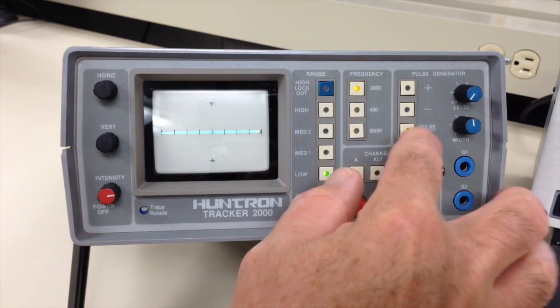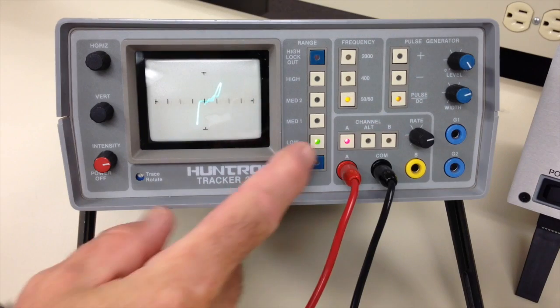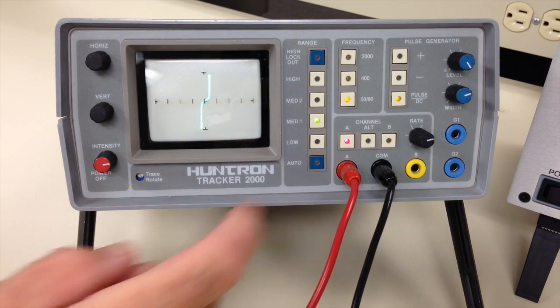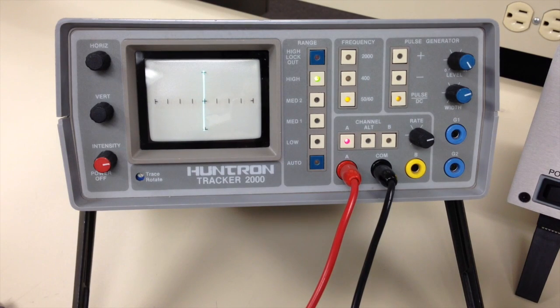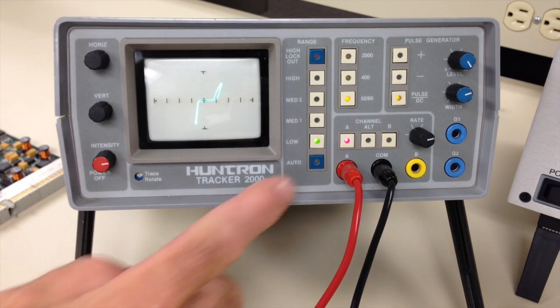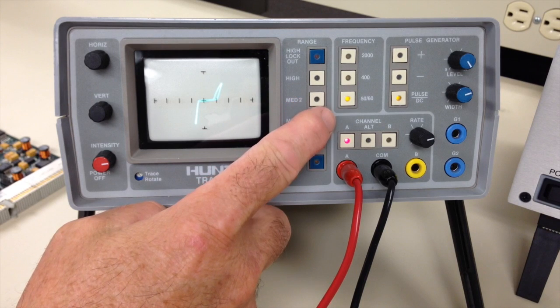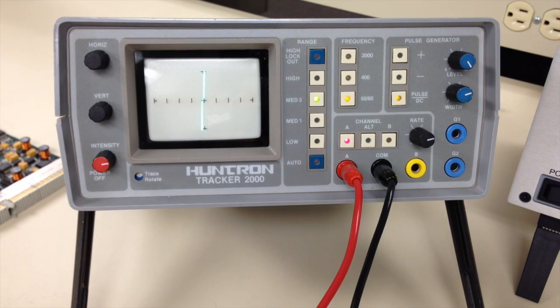When users started testing newer, low voltage, low current CMOS SMDs with their Tracker 2000, they saw the limitations in its use of higher voltages. However, the 54 ohm low range resistance was too low to see any high resistance shorts that are a common fault with CMOS semiconductors.